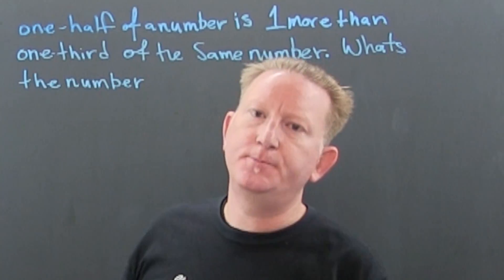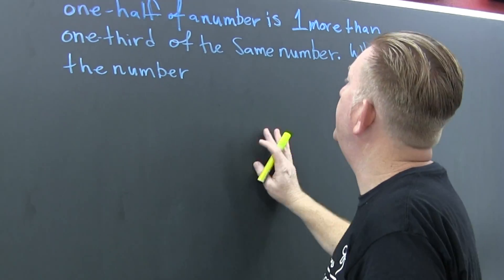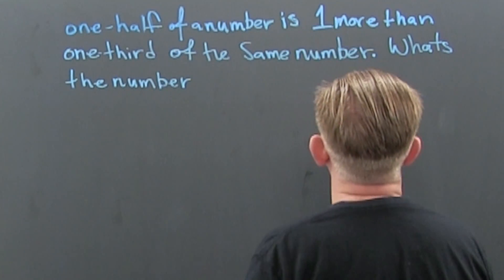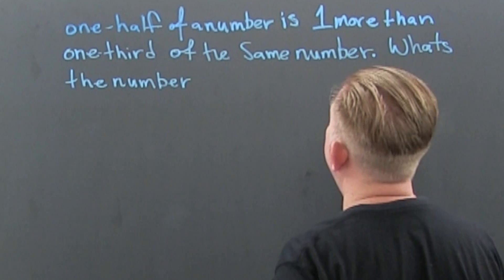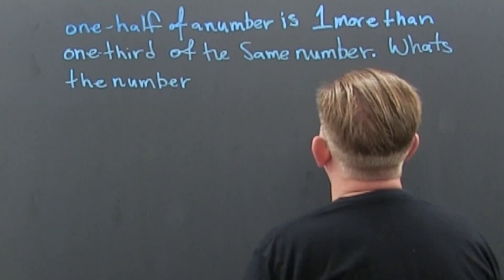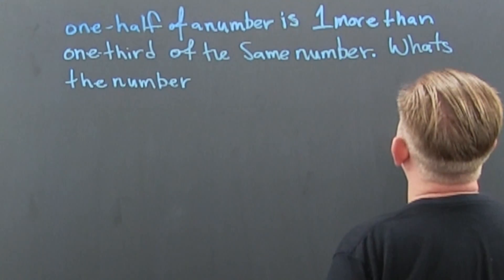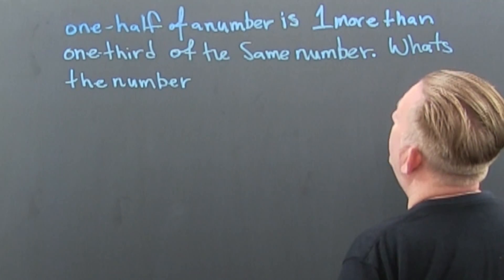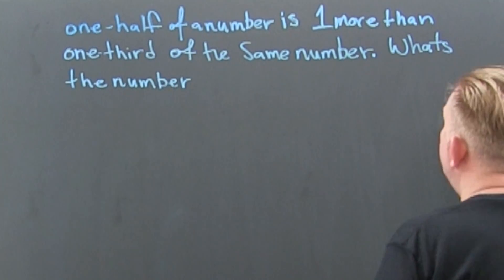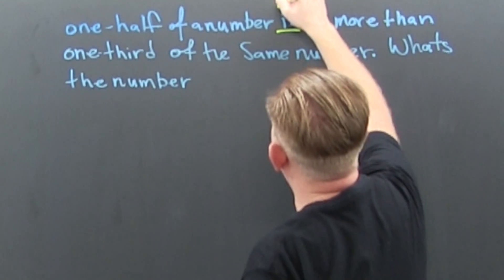The first thing I want to do is find that equal sign. So let's take some time and find that thing. One half of a number is one more than one third of the same number. Typically, when you see this, 'is' is the equal sign.